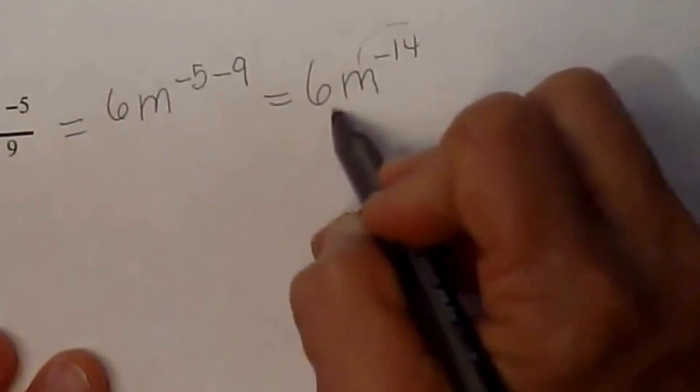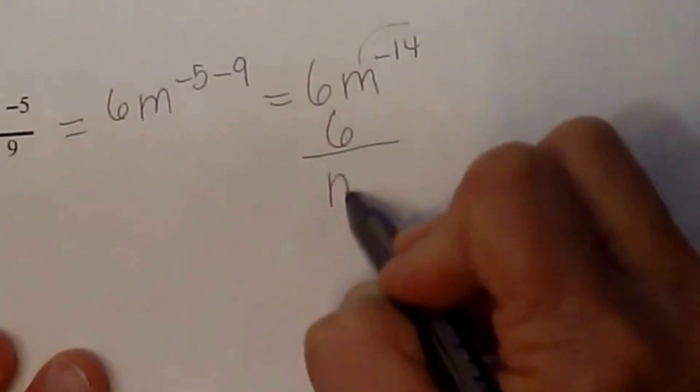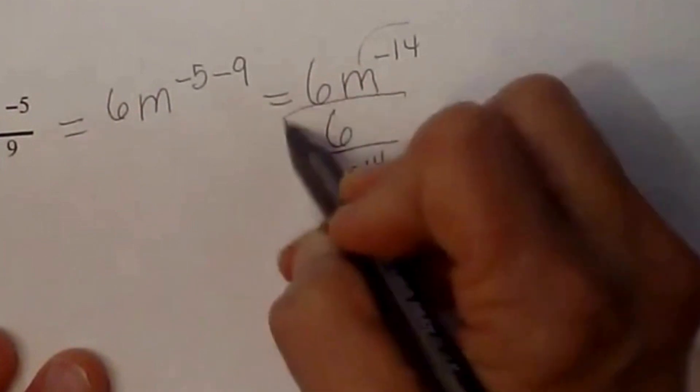Now remember, that's a negative exponent, so let's write it in the denominator. And there's our answer.